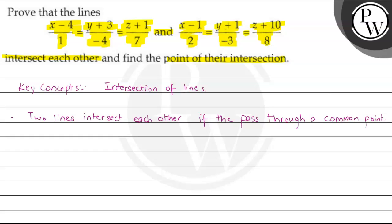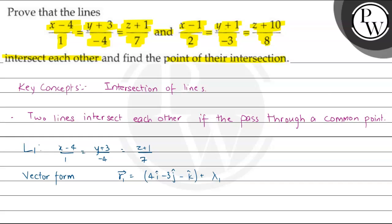Line L1 is (x−4)/1 = (y+3)/(−4) = (z+1)/7. Converting to vector form, R1 = (4i − 3j − k) + λ1(i − 4j + 7k), where λ1 is the parameter for line L1 and R1 represents any point on L1.